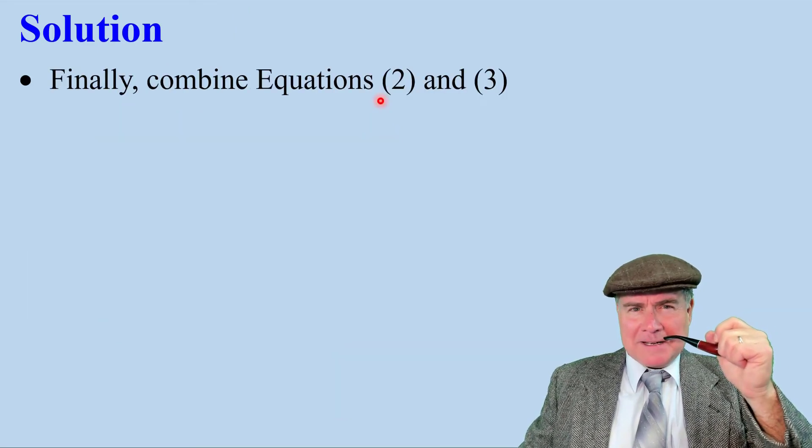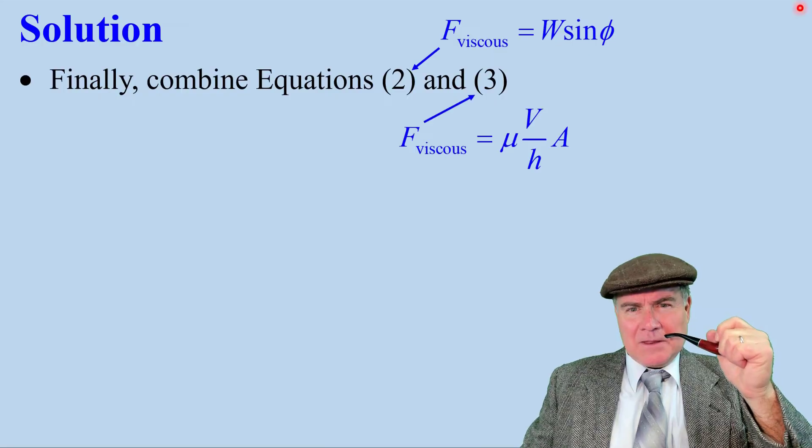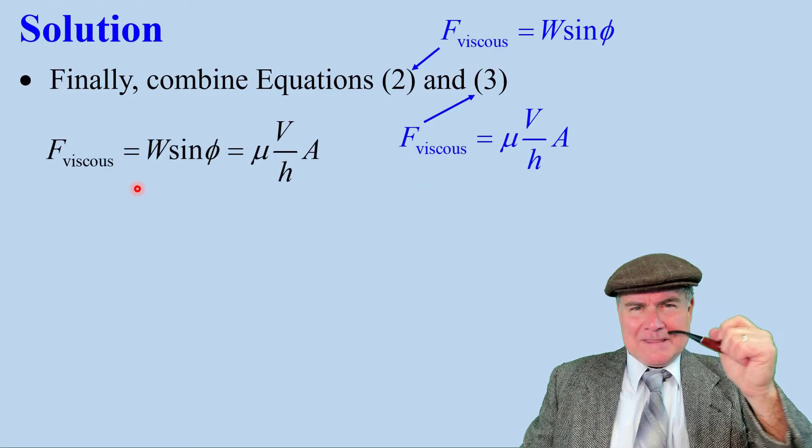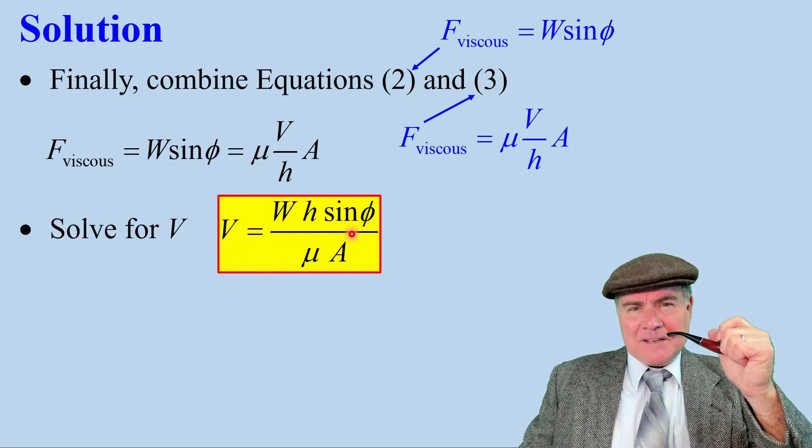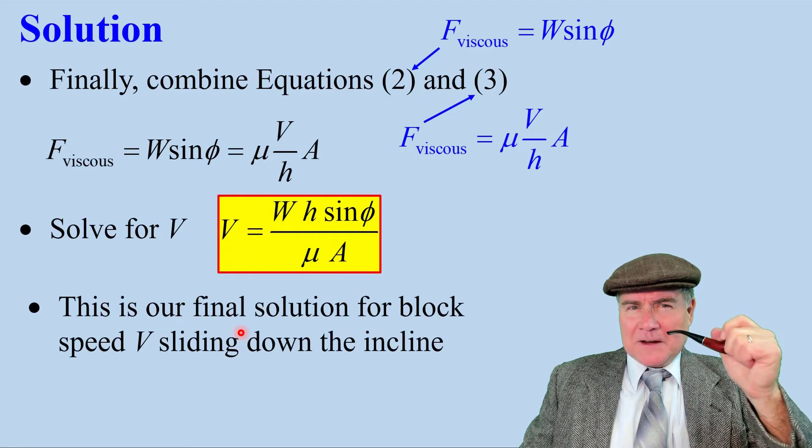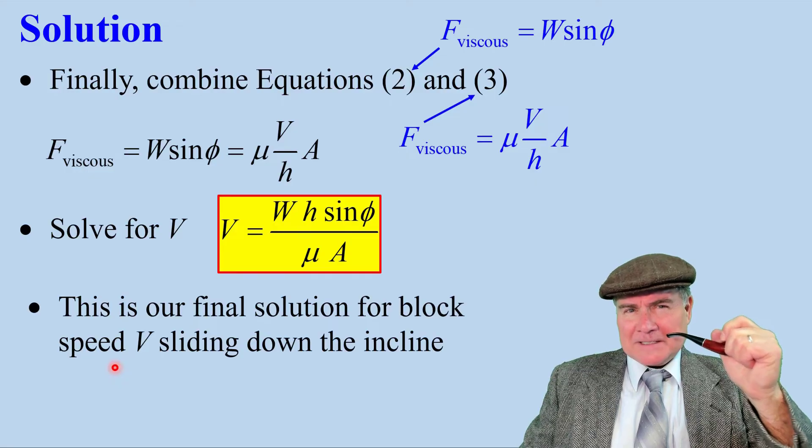Now all we do is combine equation 2, this equation, and 3, this equation. So we get this. Simply solve for V. Our final equation is V. It's W H sine phi over mu A. This is our final solution for block speed V sliding down the incline.